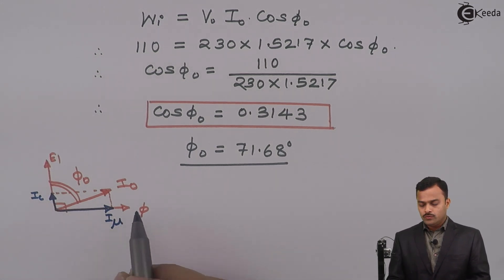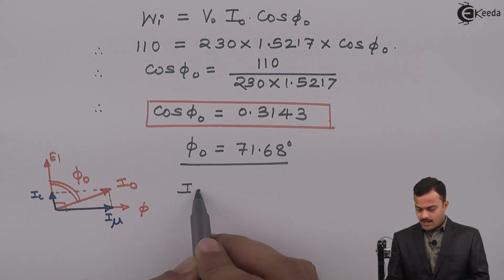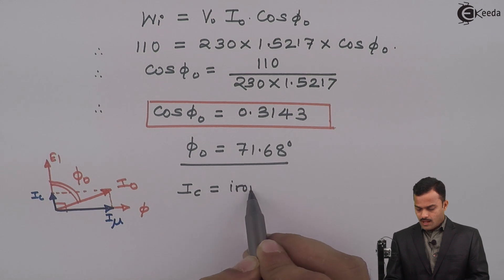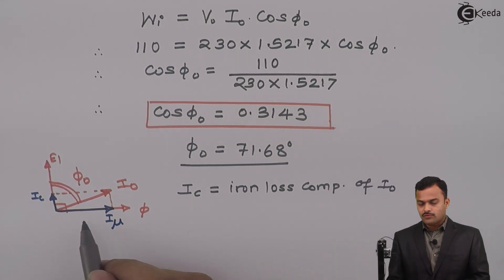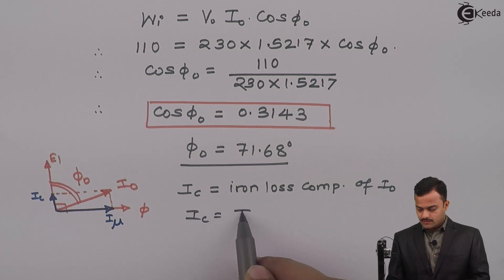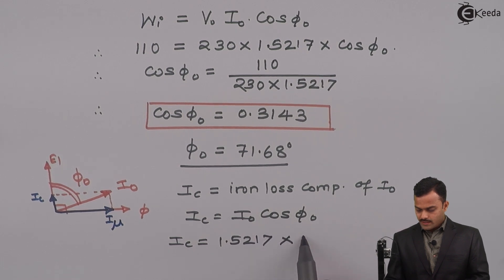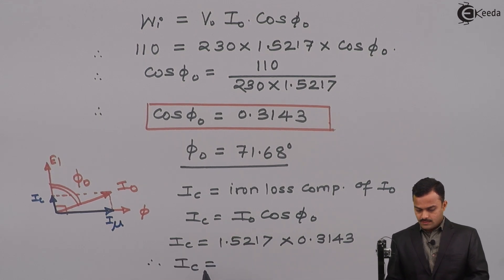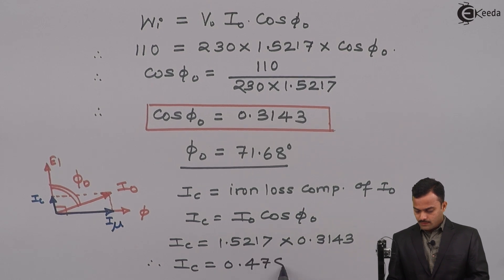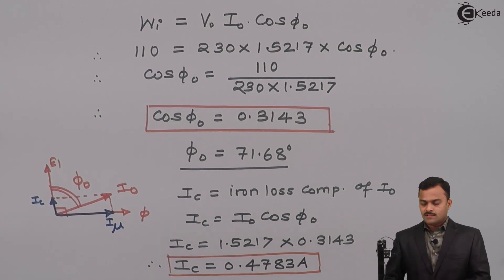So if you look at this diagram I can say I_c, which is nothing but iron loss component of I₀, from this diagram this I_c is nothing but I₀ cos φ₀. So I_c = 1.5217 × cos φ₀ = 0.3143, which will give you I_c as 0.4783 ampere.